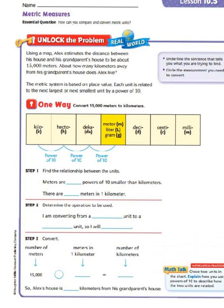Well let's take a look at our word problem. Using a map Alex estimates the distance between his house and his grandparents house to be about 15,000 meters. About how many kilometers away from his grandparents house does Alex live?